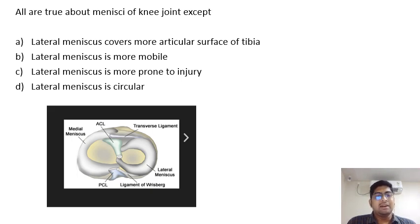Lateral meniscus is circular — yes, because the anterior horn and posterior horn are closer together, it forms a circular shape.